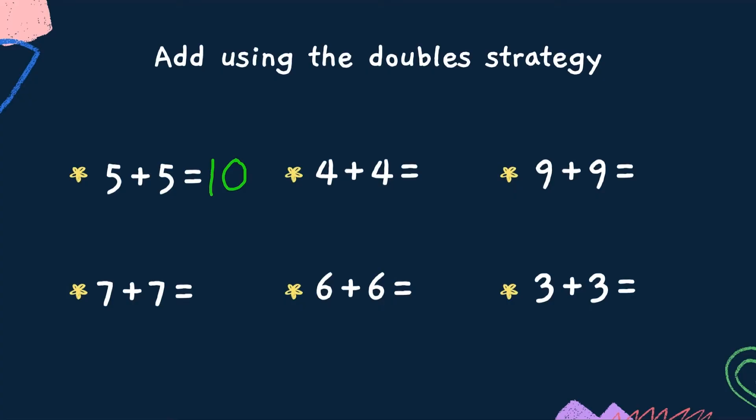4 plus 4 equals 8. 9 plus 9, 18. 7 plus 7 equals 14. 6 plus 6, very good. 6 plus 6 equals 12. And 3 plus 3 equals 6.